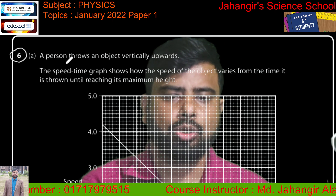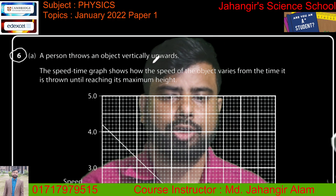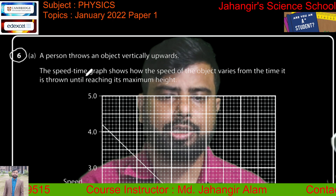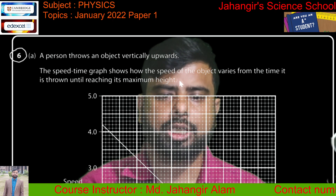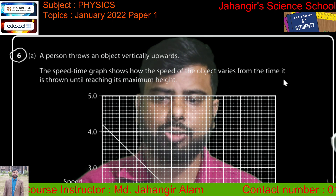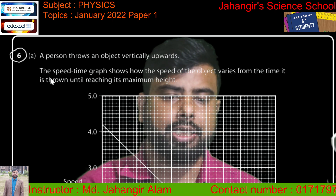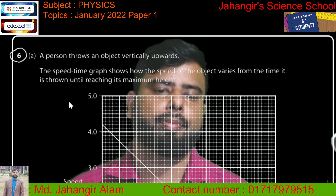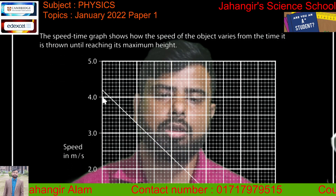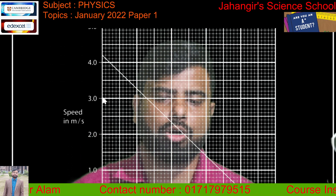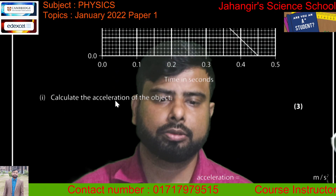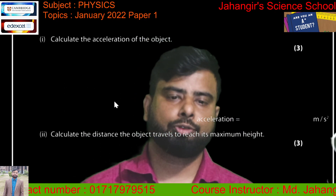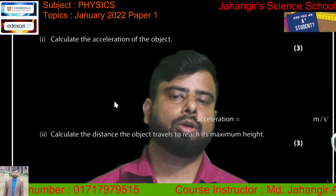A person throws an object vertically upward. The speed-time graph shows how the speed of the object varies from the time it is thrown until it reaches its maximum height. This is the velocity-time or speed-time graph. We have to calculate the acceleration of the object.